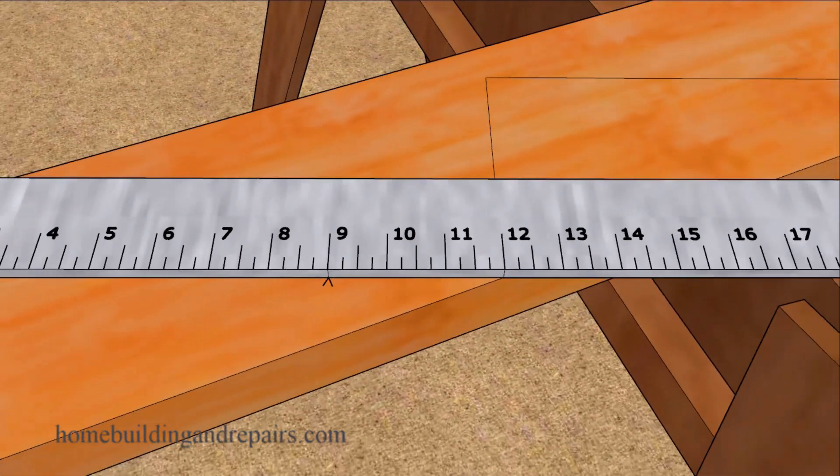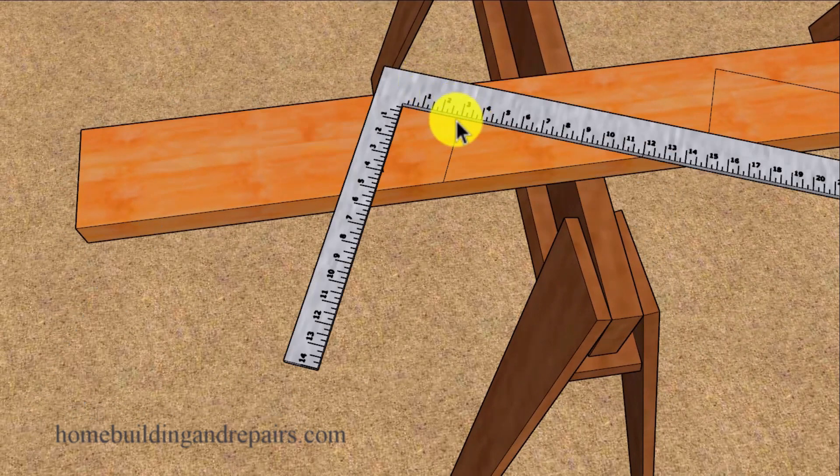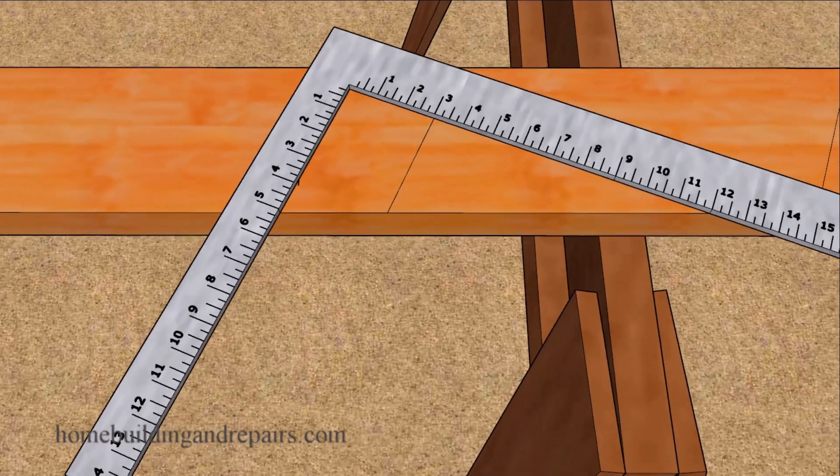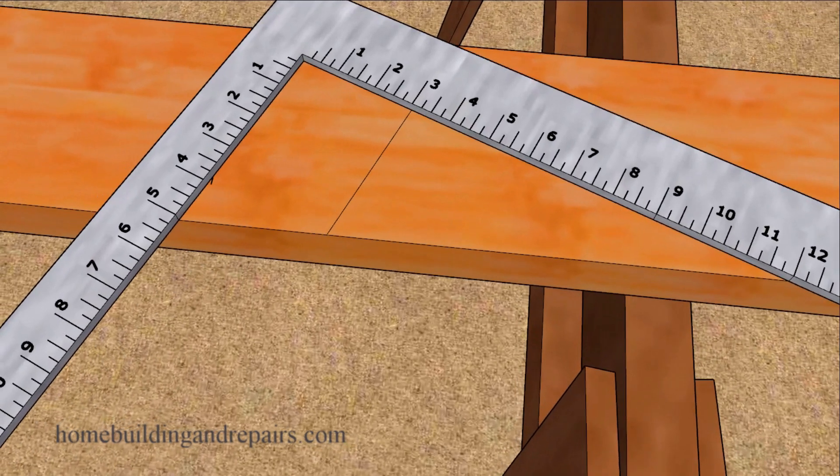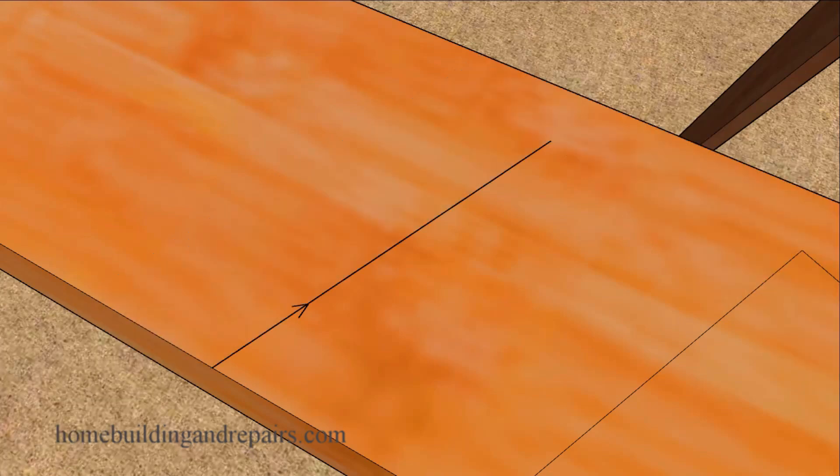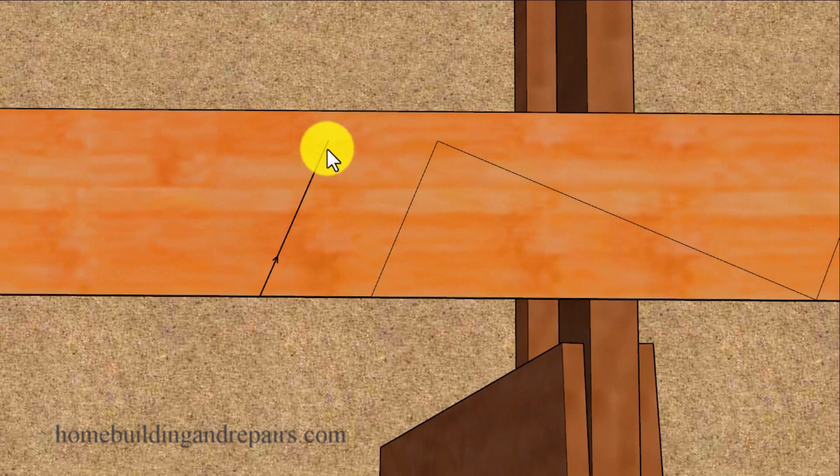Or we can reposition the framing square and do it another way. We could slide the framing square over to the 3 inch mark on the framing square to where we have 3 inches here and then make another mark here or simply draw a line here. Let's zoom in on that so you can get a better idea. You could always draw a line here or just make a mark and then move the framing square over, or use a straight edge to extend the line all the way to the other side.